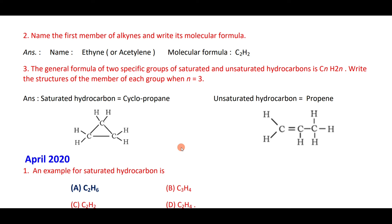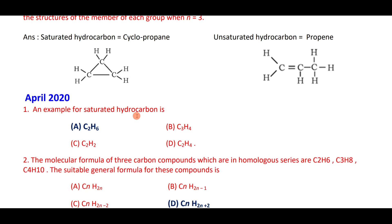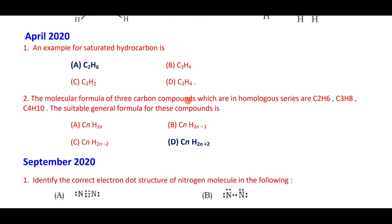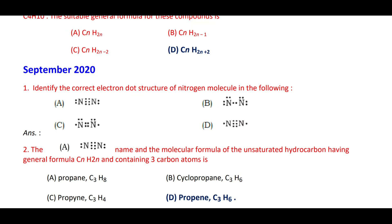An example for a saturated hydrocarbon is ethane — C₂H₆ — option A. The molecular formulas C₂H₆, C₃H₈, C₄H₁₀ are in a homologous series, and the general formula is CₙH₂ₙ₊₂. The correct electron dot structure of the nitrogen molecule is option A.